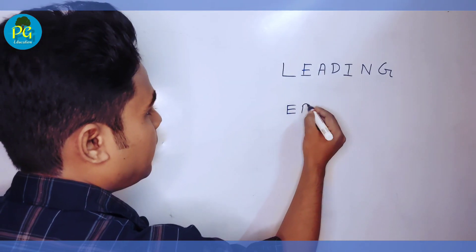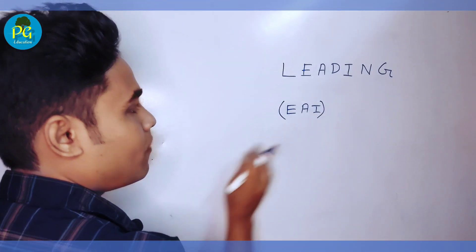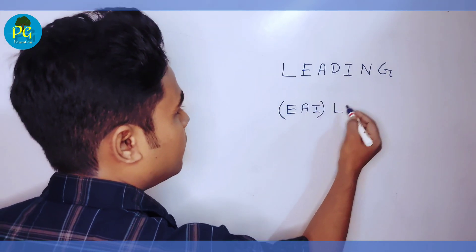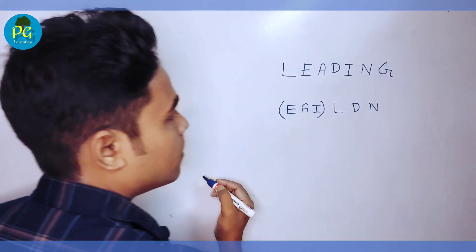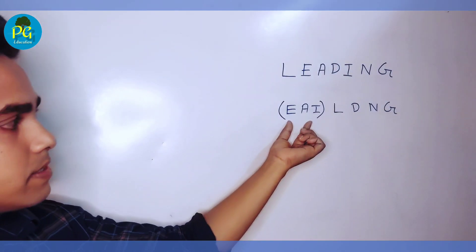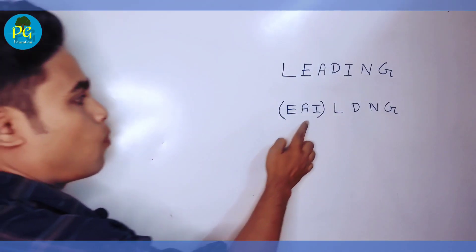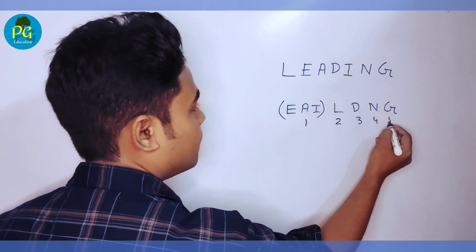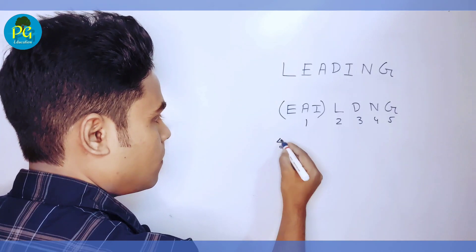We put E, A, I inside a bracket and count them as a single letter. The remaining letters are L, T, N, and G. So if we count the 3 vowels as a single letter, then there are 5 letters total. So we can arrange these letters in 5 factorial ways.